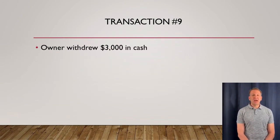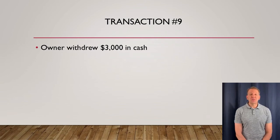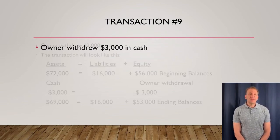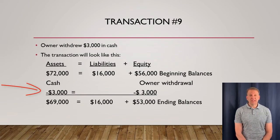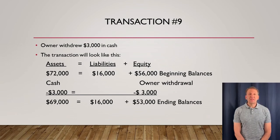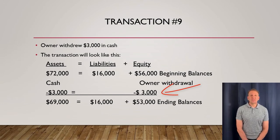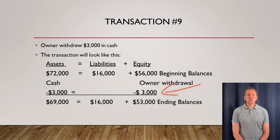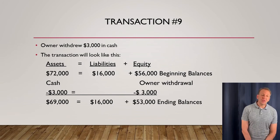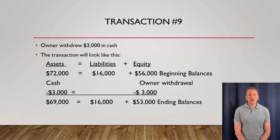In transaction number nine, the owner is withdrawing $3,000 in cash for personal reasons. Cash goes down because cash is leaving the business and going to the owner. The equity account also has to be reduced because the owner is taking $3,000 out of the business. Under withdrawals we show a negative $3,000 representing this withdrawal. The ending balances are all still in balance because the transaction itself was in balance.